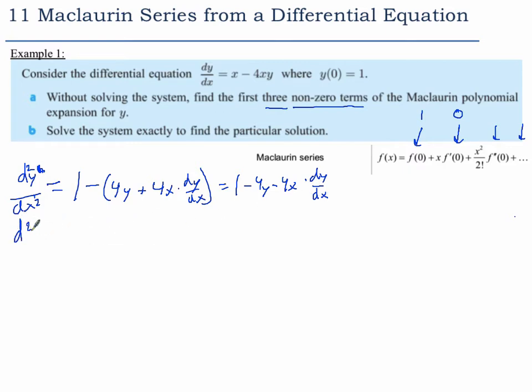Now if I evaluate the second derivative, I just plug in x equals 0, y equals 1 into this one. What do we get? This term is 0, and we get 1 minus 4 times 1, so that's going to be negative 3 for this one.